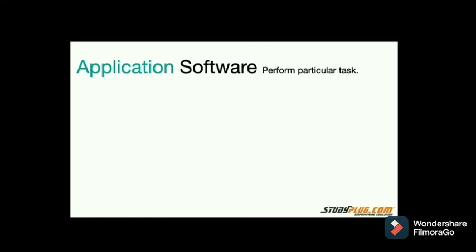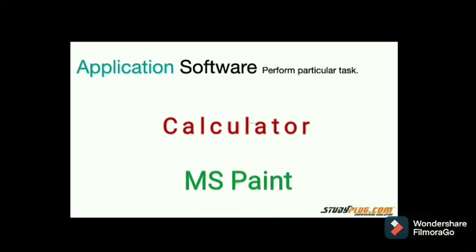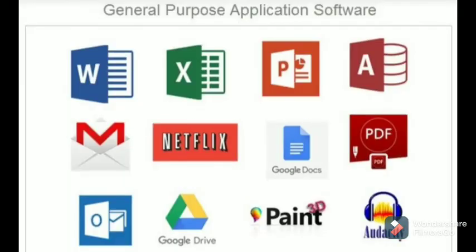Application software consists of programs that perform a particular task. They are meant to do a single kind of work and cannot manage the computer and its hardware devices. Application software is used for particular tasks and may or may not be installed on the computer. Examples of application software include Paint, Gmail, MS Word, and Media Player — these are things we use in our day-to-day life.